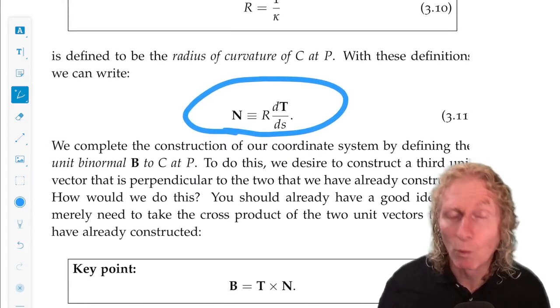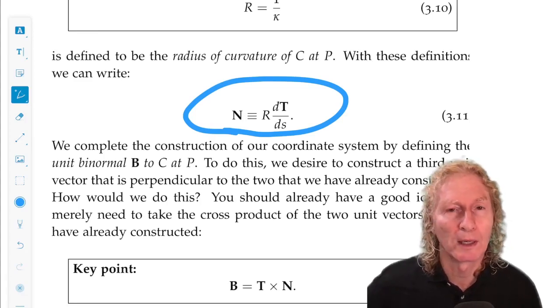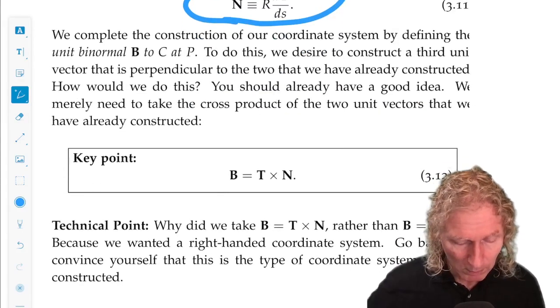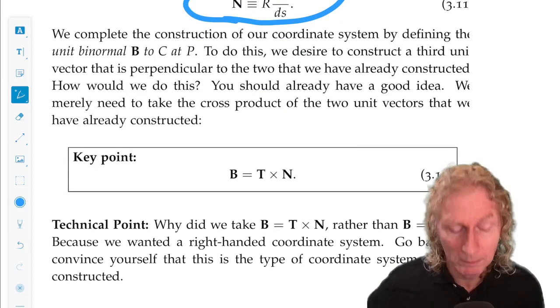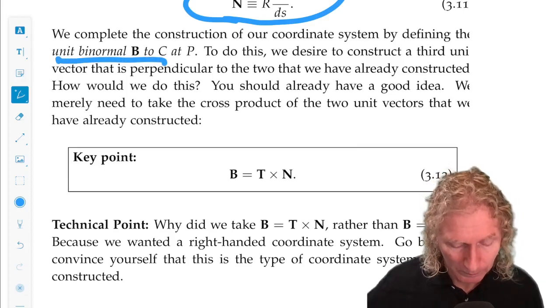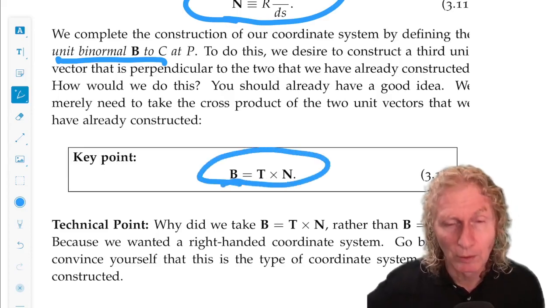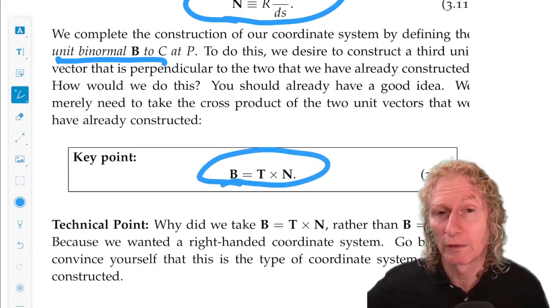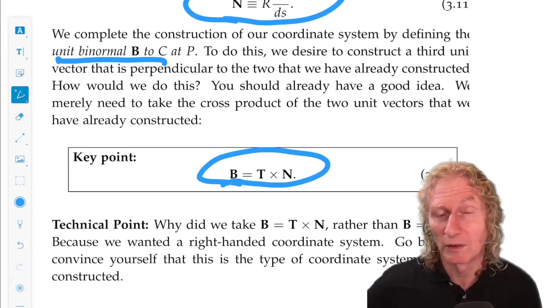Now, we need one more vector. We have two unit vectors defined at the arbitrary point on the curve, T and N. And so the final vector, we call the unit binormal, B. And it's just going to be the cross product of T and N, T cross N. Now, it's important that we take T cross N because the cross product is not commutative.